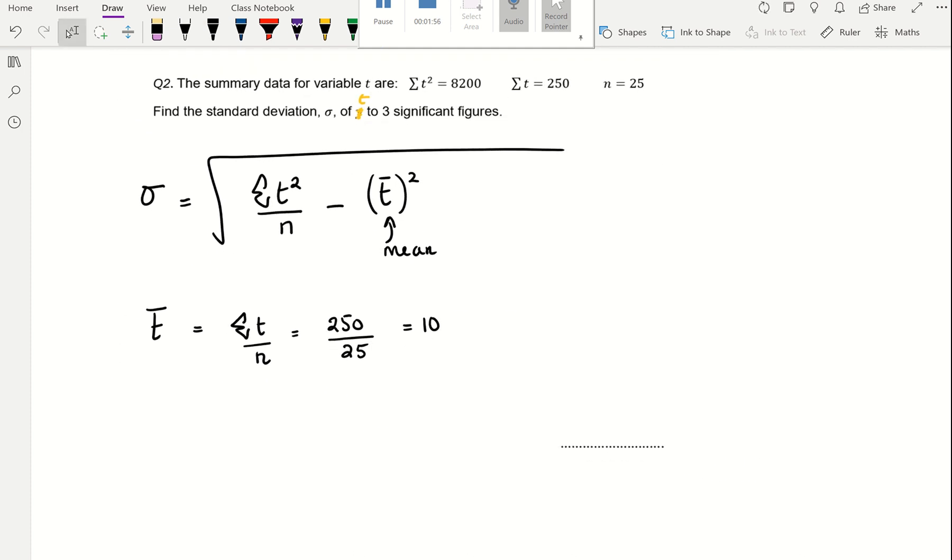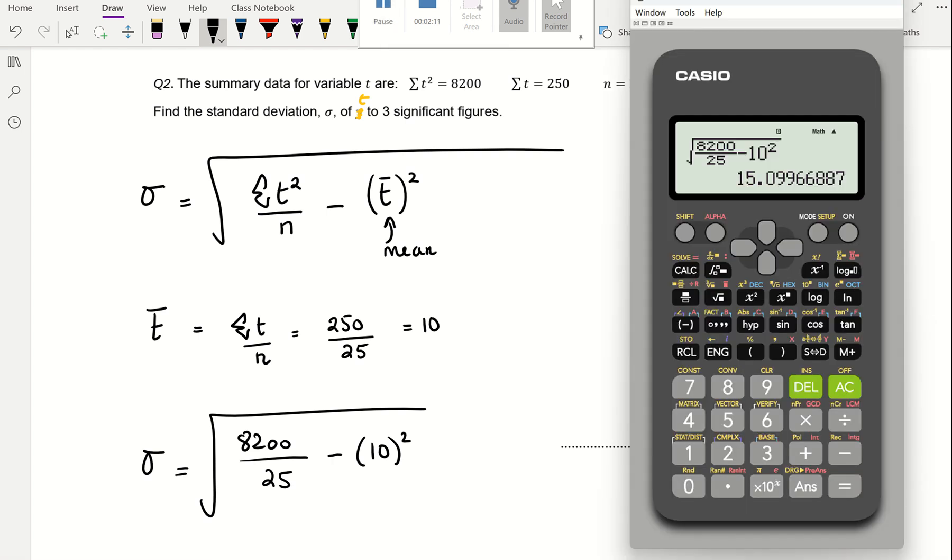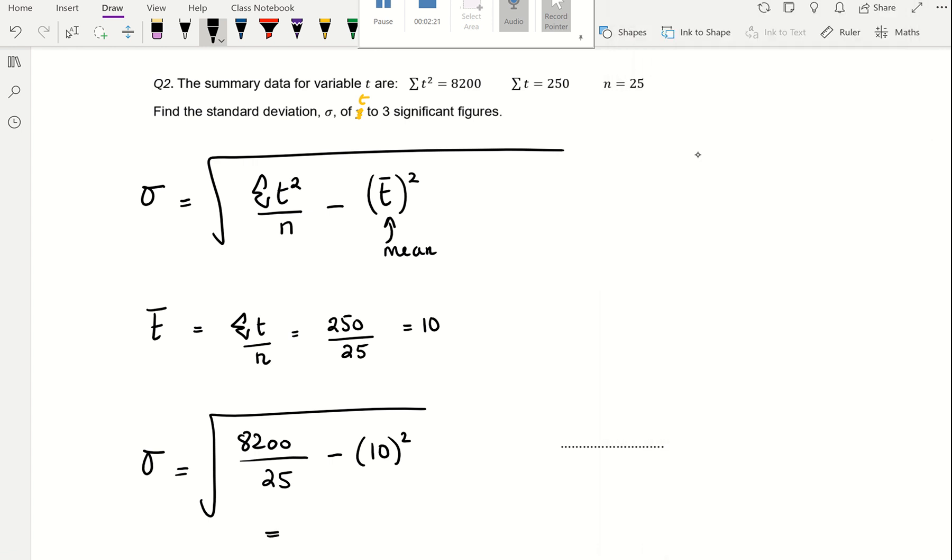After that I can find my standard deviation. The square root of 8200 divided by 25 minus 10 squared. You put that into your calculator. I would start by putting the square root first, then the fraction, and then minus the mean squared. And you get 15.099.